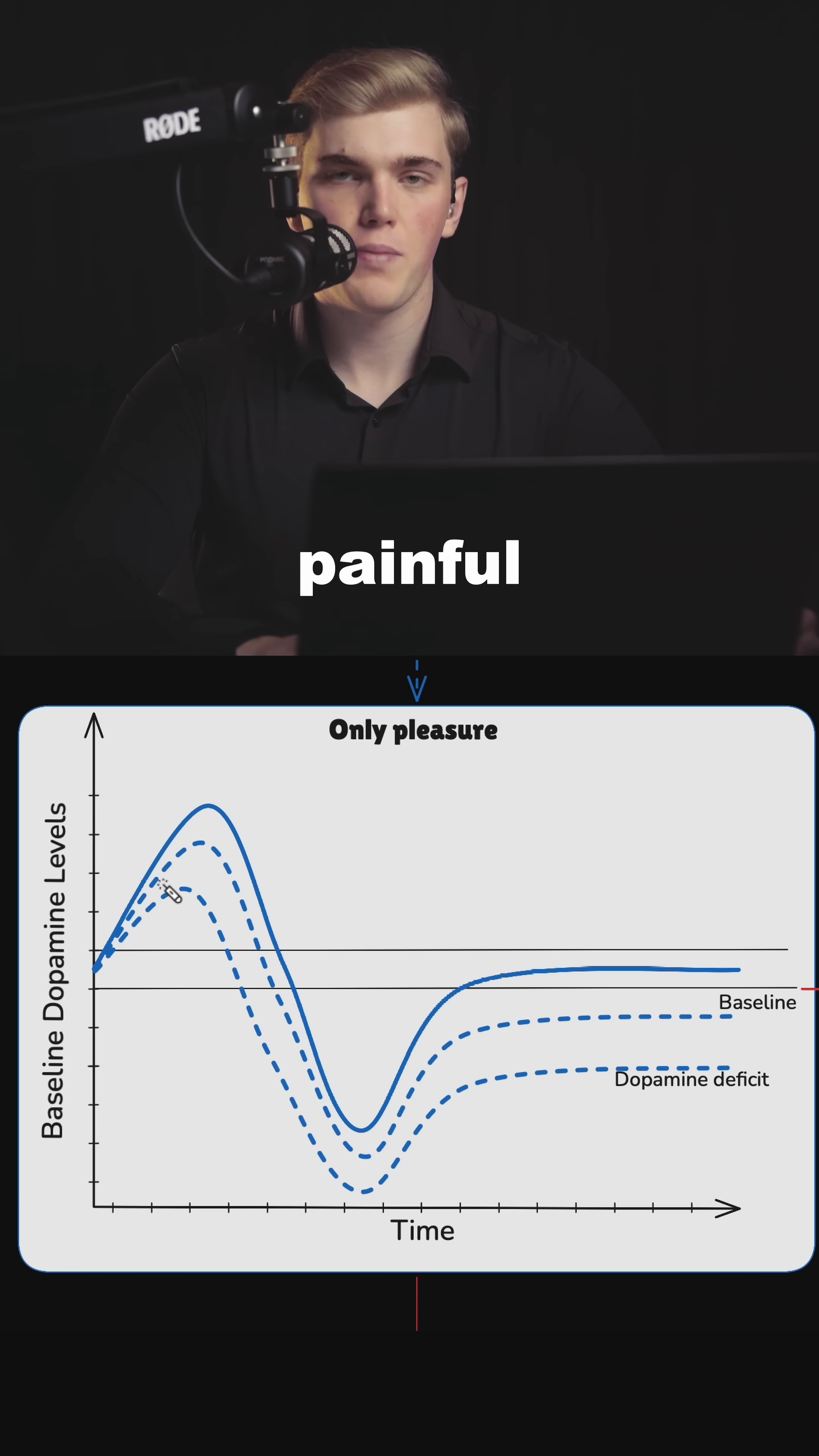Whenever you smoke a cigarette, there is no painful stimulus that you need to overcome. You will immediately get a peak, a spike in dopamine. However, because there was no amount of effort needed to smoke, you not only get a spike in dopamine but then you also get a dopamine crash. Your dopamine levels drop below baseline. However, after that they will return to baseline.